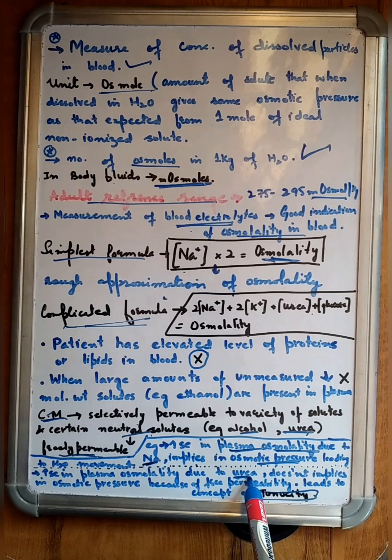An increase in plasma osmolality due to urea doesn't have the same effect because of the free permeability of urea in ICF and ECF. This leads to the concept of effective osmolality, or tonicity, which we are going to discuss in our upcoming videos.